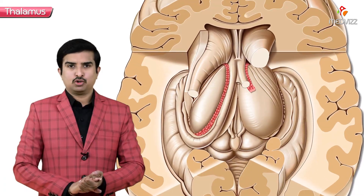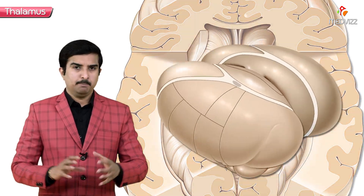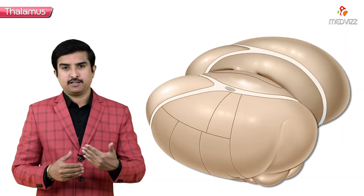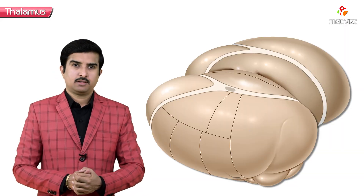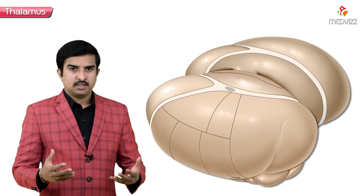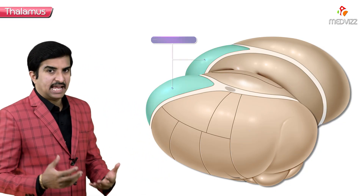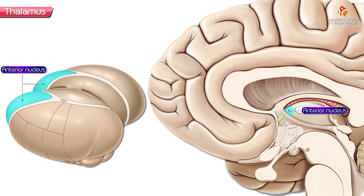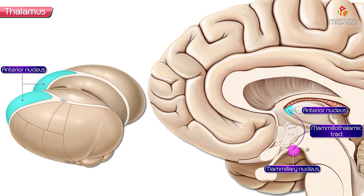Here we are going to discuss the major thalamic nuclei and their afferent and efferent connections. First, let us talk about the anterior nucleus. The anterior nucleus receives hypothalamic input from the mammillary nucleus by means of the mammillothalamic tract.